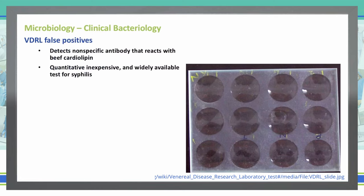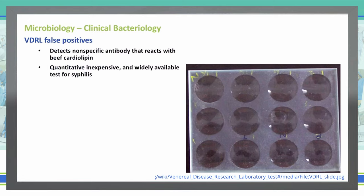If we have a positive test, that's not a confirmation but an indication to proceed to a more expensive confirmatory test. The basis of the VDRL is that antibodies our body produces against the syphilis spirochete will react to an extract from an ox heart — that beef cardiolipin, which is actually diphosphatidylglycerol. The test checks for IgG, IgM, or IgA antibodies against that cardiolipin, and a positive result is seen as foaming or flocculation in the test tube.